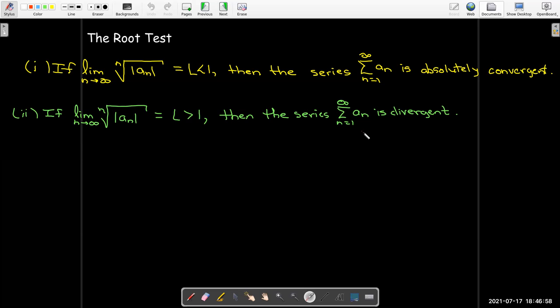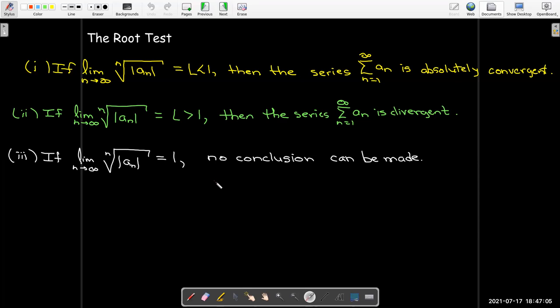And just like we saw with the ratio test, if the limit value is exactly one, then we can't draw any conclusion. We're going to have to use some other different tests to determine whether the series is convergent or divergent.